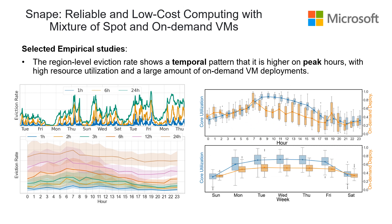The region-level eviction rate shows a temporal pattern — it is higher during peak hours. As shown in the image on the left, the eviction rate is always high on working days and working hours. The eviction rate also has connections with resource utilization and deployment of on-demand VMs. If we have a lot of on-demand VMs or very high resource utilization, the eviction rates will be high.